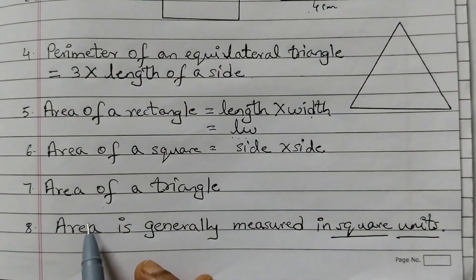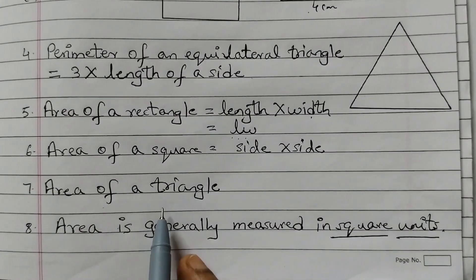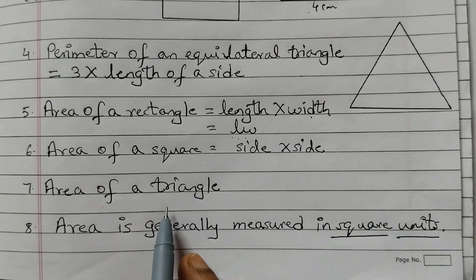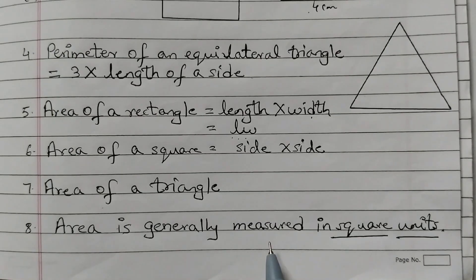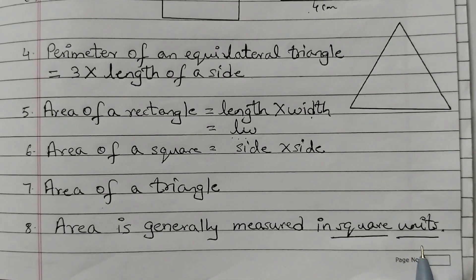The area of a square is equal to side into side. For the area of a triangle, there is no formula given in the textbook — you need to use grid paper to find the area. Area is generally measured in square units, such as square meters, square kilometers, or square centimeters.